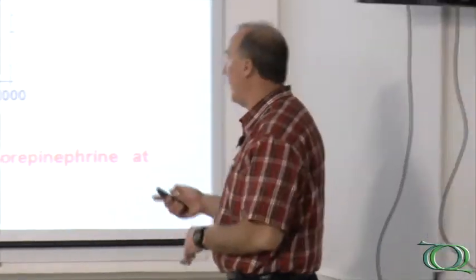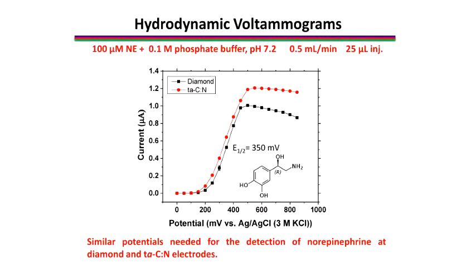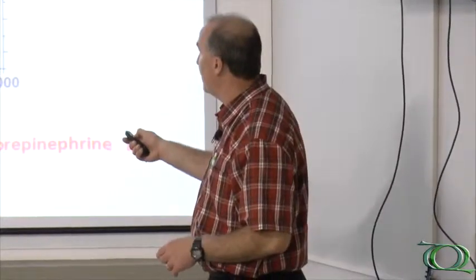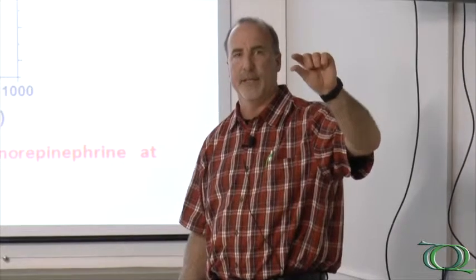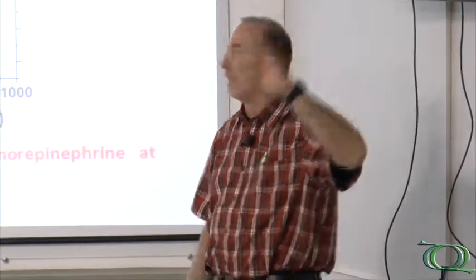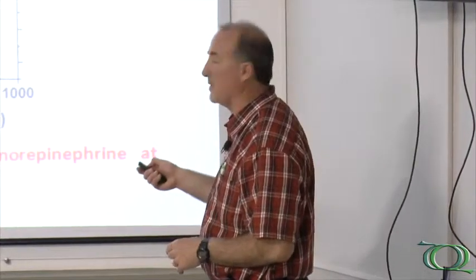For hydrodynamic voltammetric measurements, we make injections of the analyte at different potentials and plot the average current. The red curve is for a TAC electrode, the black curve for a diamond electrode, and the molecule being oxidized is norepinephrine, a neurotransmitter undergoing a two-electron, two-proton oxidation. The half-wave potentials are virtually identical for both electrodes, meaning the electrochemical activity is the same. The limiting current differs slightly due to different channel heights in the two measurements, but what is important is the same half-wave potential — the same level of activity for both electrodes.